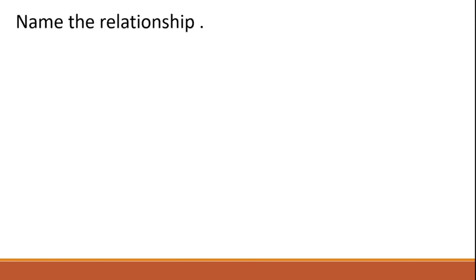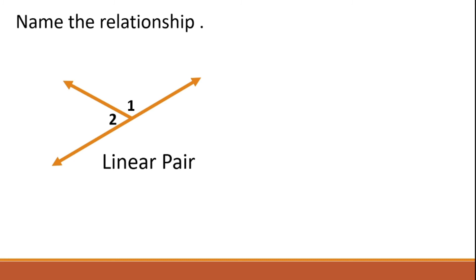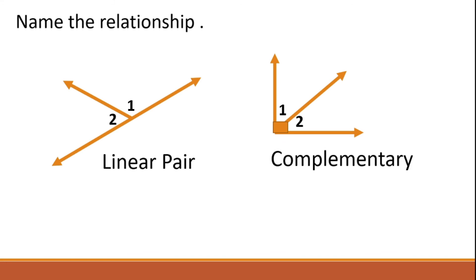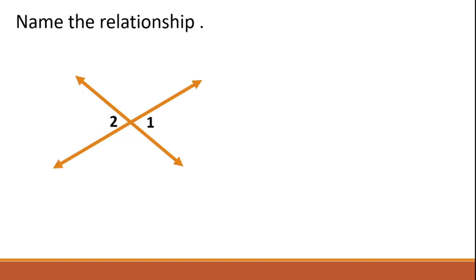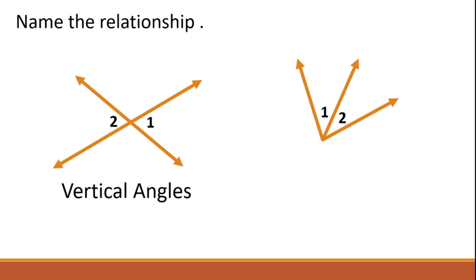Now let us name the relationship of angle 1 and angle 2 using the following figures. In this figure, angle 1 and angle 2 form a linear pair or adjacent angles. In this figure, angle 1 and angle 2 are complementary angles. In this figure, they are vertical angles. And in this figure, they are adjacent angles. You did a great job!